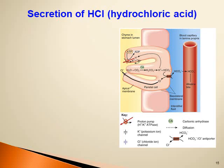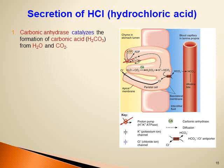Now let's discuss how HCl is secreted from the parietal cells. Parietal cells are rich in the enzyme carbonic anhydrase, which catalyzes the reaction between water and carbon dioxide to produce carbonic acid. Carbonic acid then dissociates into hydrogen ions and bicarbonate.